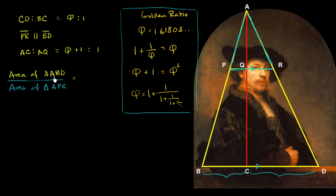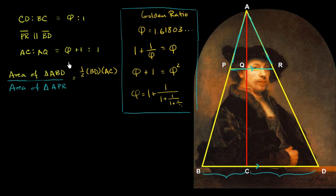Let's take it step by step. The area of any triangle is one-half times base times height. So the area of triangle ABD equals one-half times BD times AC. And the area of triangle APR equals one-half times PR times AQ. To simplify the ratio, the one-halves cancel out. We're left with (BD times AC) over (PR times AQ), which we can rewrite as (BD over PR) times (AC over AQ).